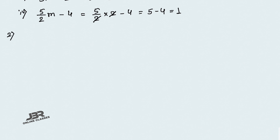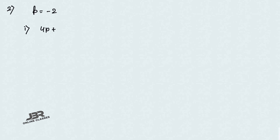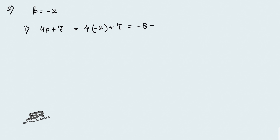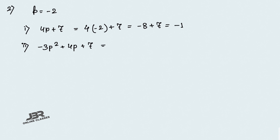Sum number 2: if p equals minus 2, find the value of 4p plus 7. Here p has a negative value, so 4 into (minus 2) equals minus 8, plus 7 equals minus 1. For negative values, always use brackets — please remember this.